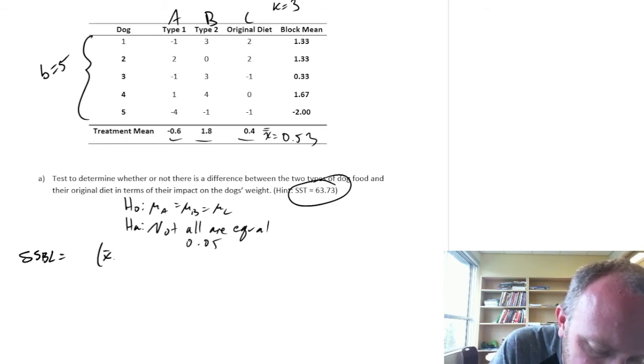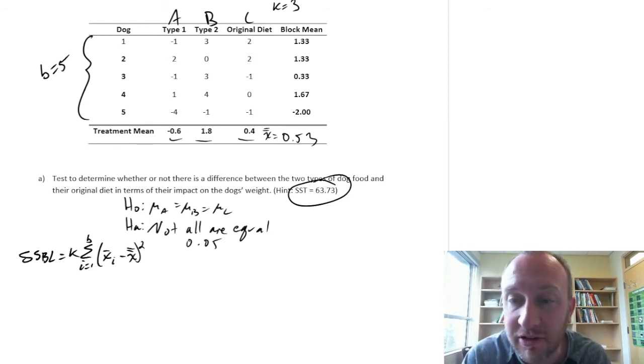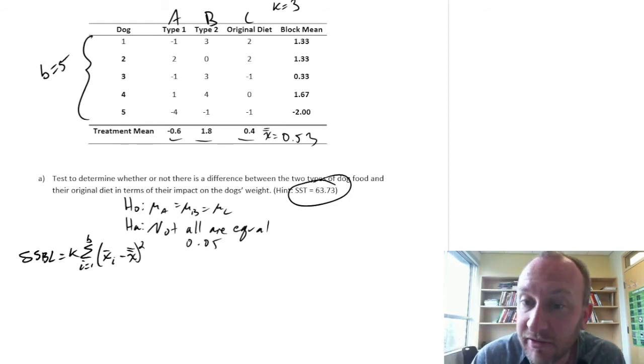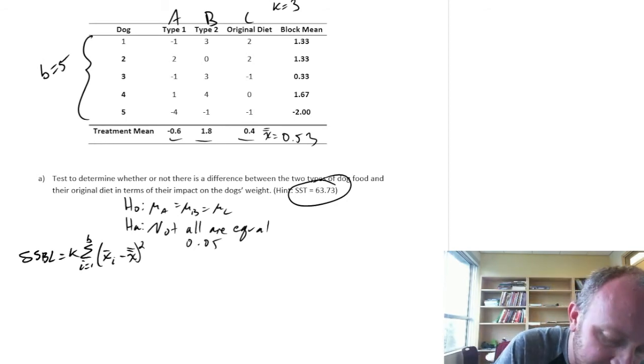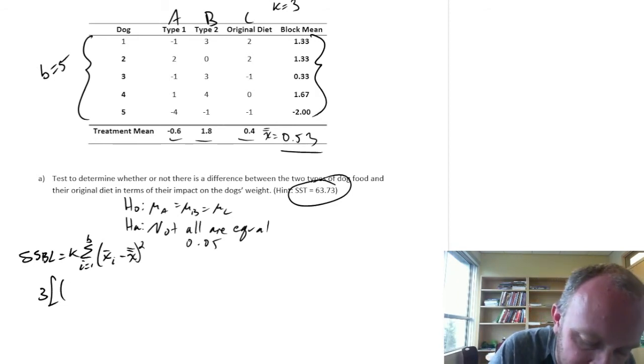SSBL. Now we're looking at those difference in block means and the grand mean squared. Add those up across all of the blocks and multiply it by k, the number of treatments, or simply the number of observations in that relevant block mean. So k is 3. Now we go across these 5 block means and the difference with the grand mean. So 1.33 minus 0.53 squared. Next one's the same. 1.33.